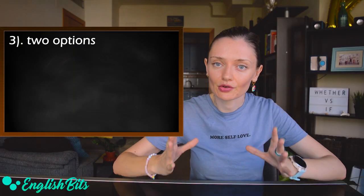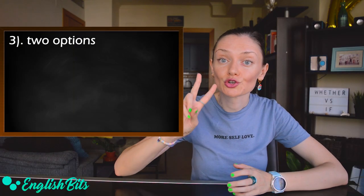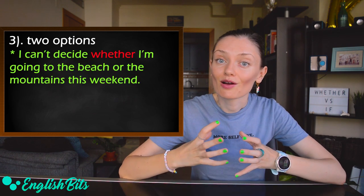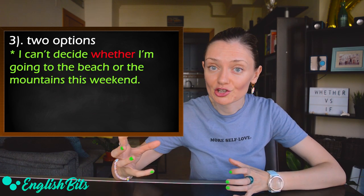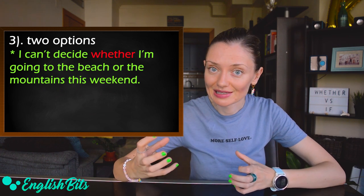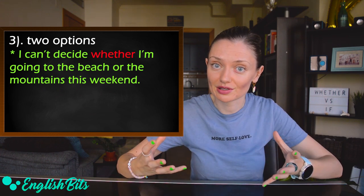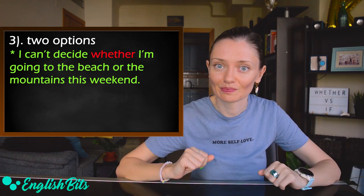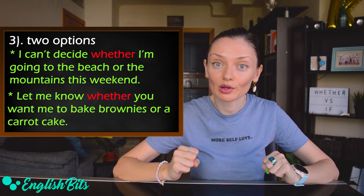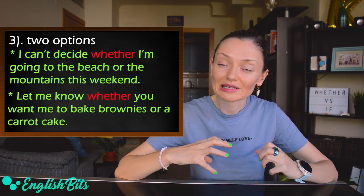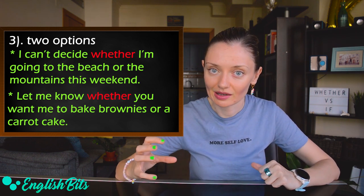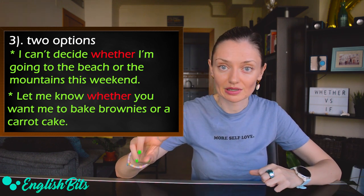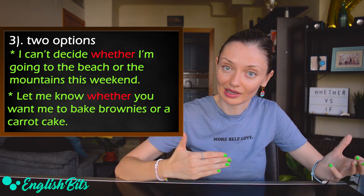Number three: we use 'whether' when we've got two options. For example: 'I can decide whether I'm going to the beach or the mountains this weekend.' I've got two options — going to the beach or the mountains. And one more example: 'Let me know whether you want me to bake brownies or a carrot cake.' So the same in this case — we've got two options: a carrot cake and a brownie.